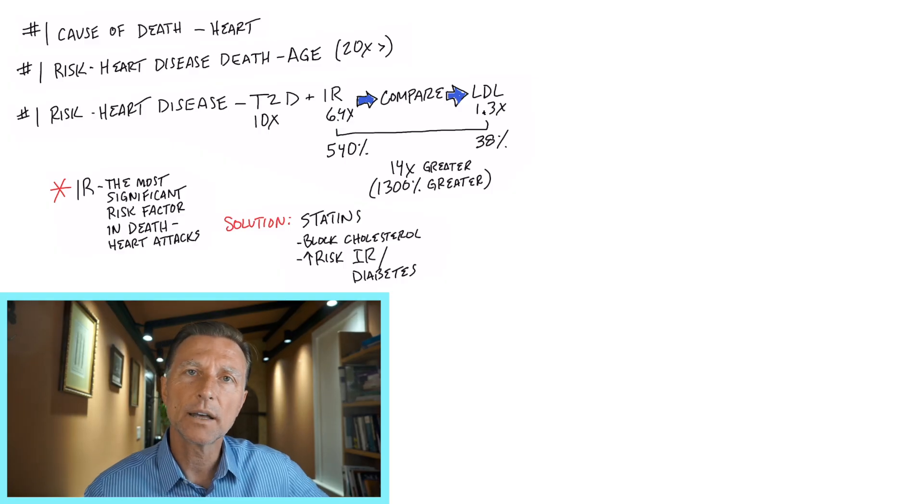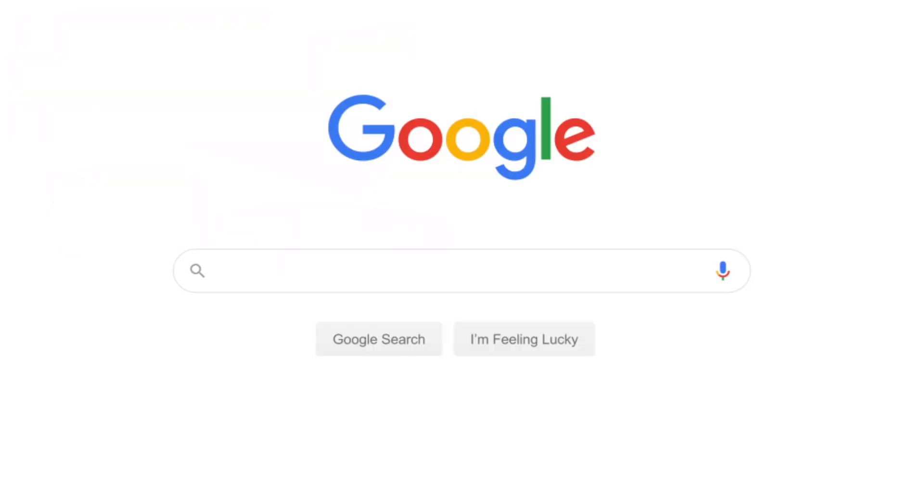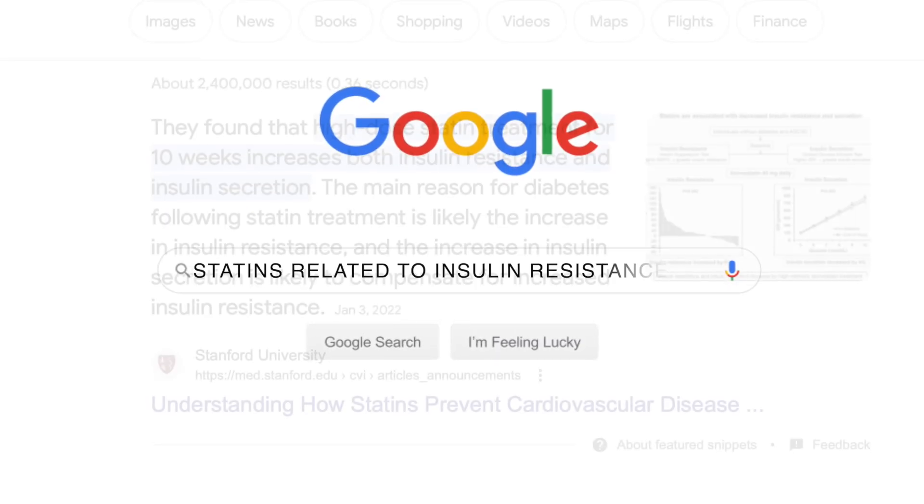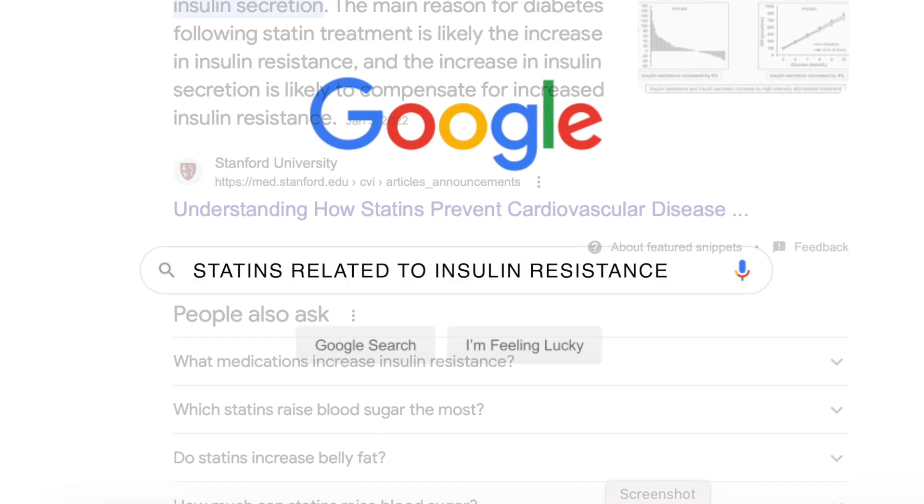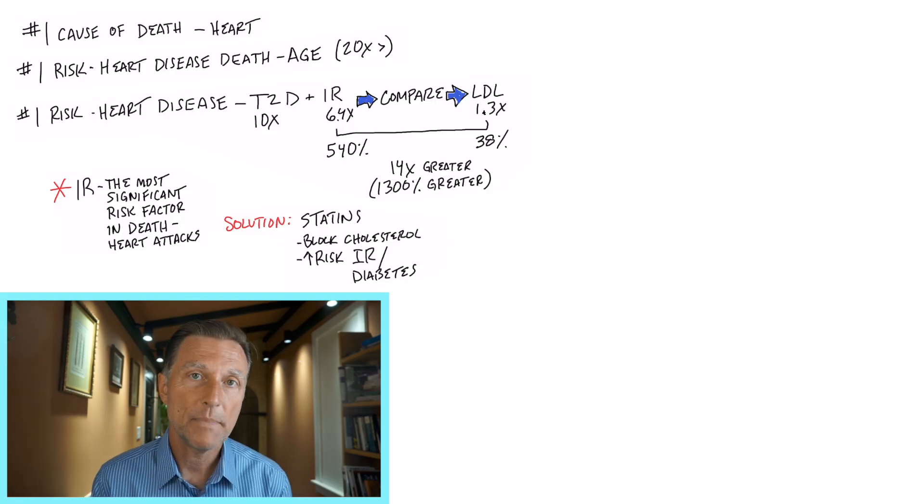What's a statin? It's a drug that blocks the production of cholesterol in the body. And when we're done with this video, go ahead and go to Google and just type in statins related to insulin resistance. And you're going to find that right down the list, there are many, many studies showing that when people take statins, they can develop insulin resistance and even diabetes.